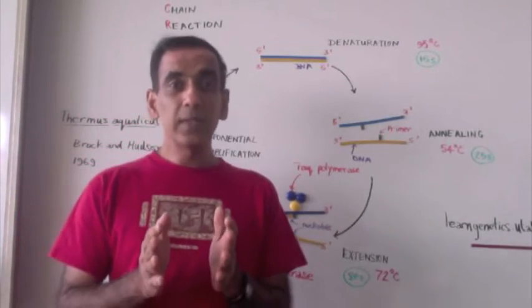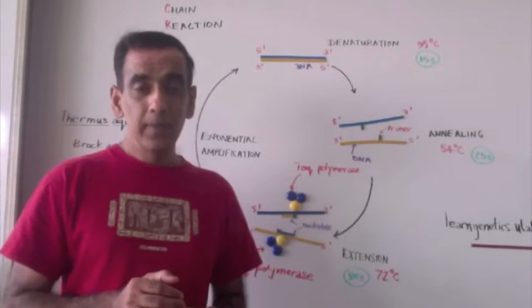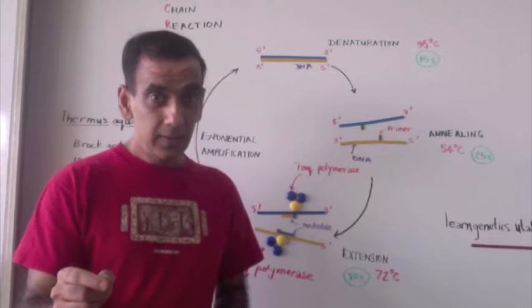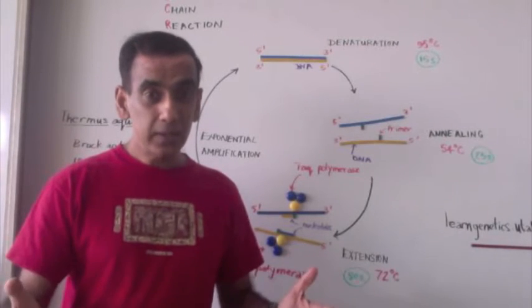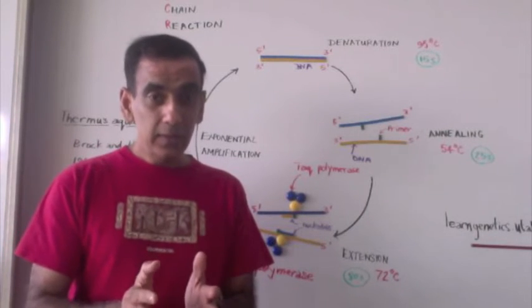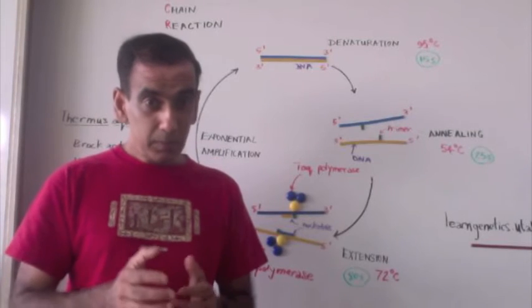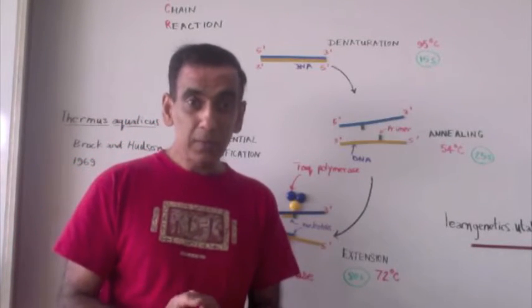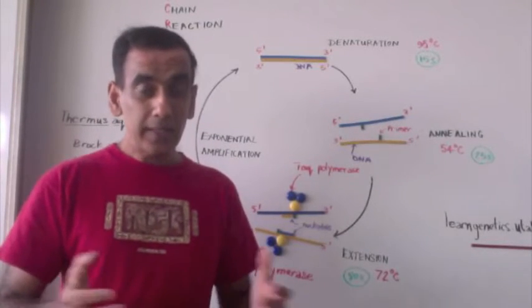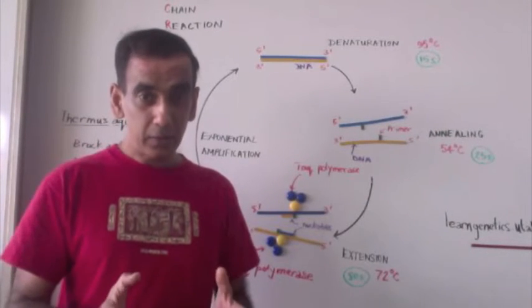Mullis would go on to receive a Nobel Prize in 1993 for his groundbreaking work. And it was his work that opened up so many other areas of molecular biology, like DNA sequencing. And it was his work that was instrumental in the human genome project. And the polymerase chain reaction continues to be an important tool in all aspects of DNA sequencing and 21st century bioinformatics.